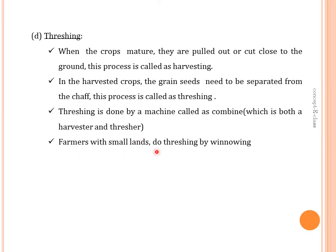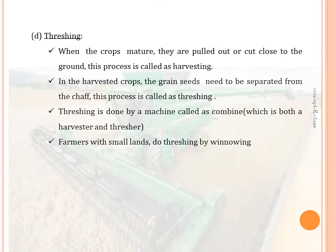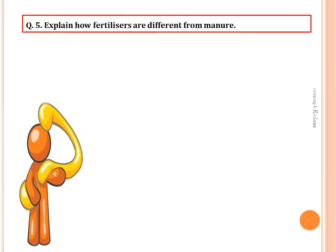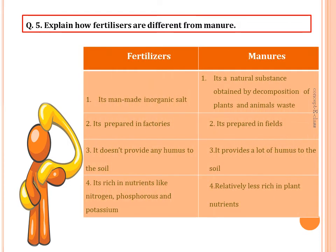Farmers with small lands do threshing with the help of a process called winnowing. The combine harvests the crops and also does the process of threshing — it separates the chaff along with the grains.